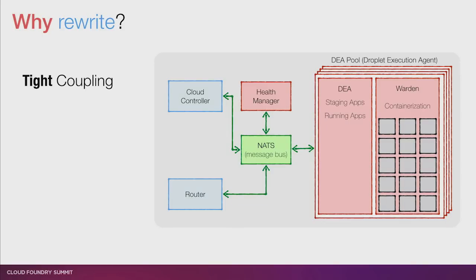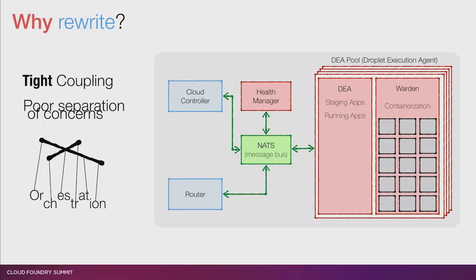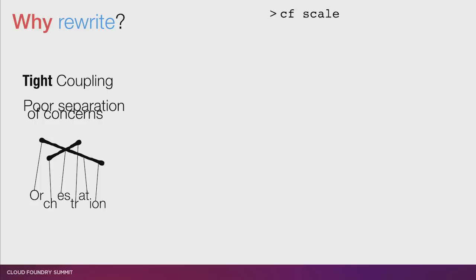First, there's a lot of tight coupling between these components and poor separation of concerns. One concrete implication of this is what I call orchestration. So here you are as a developer on your console, and you say, 'Cloud Foundry, scale me up some instances — I need three more instances.' Well, Cloud Controller receives that message and, rather than just telling the system to make it so, it directly tells individual DEAs to start and stop.